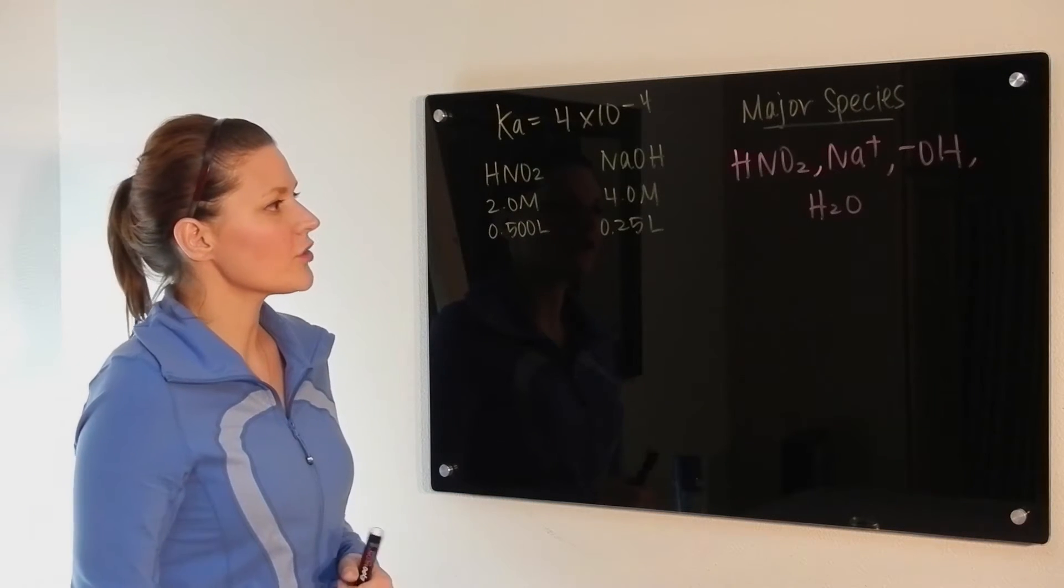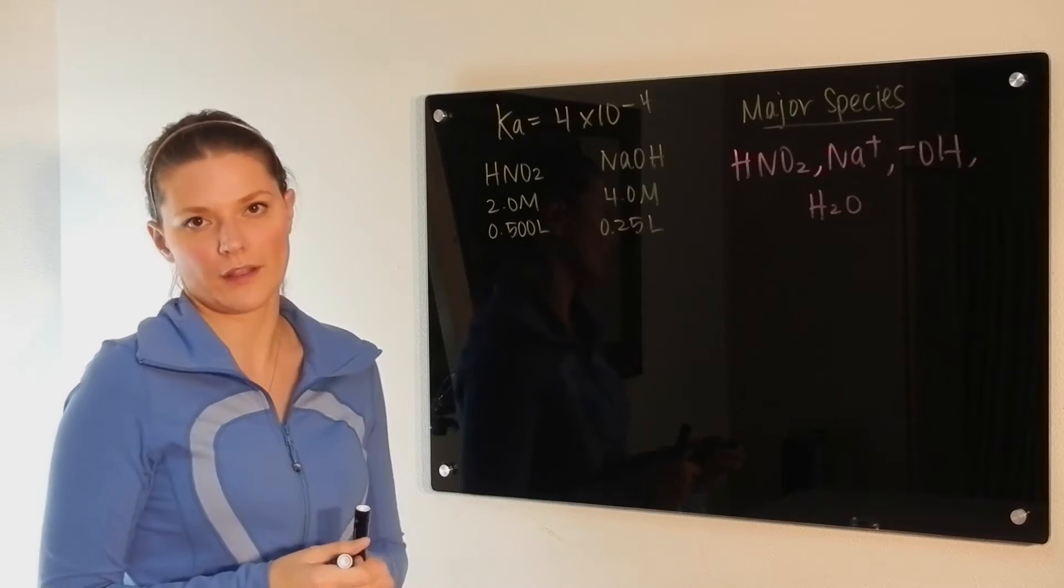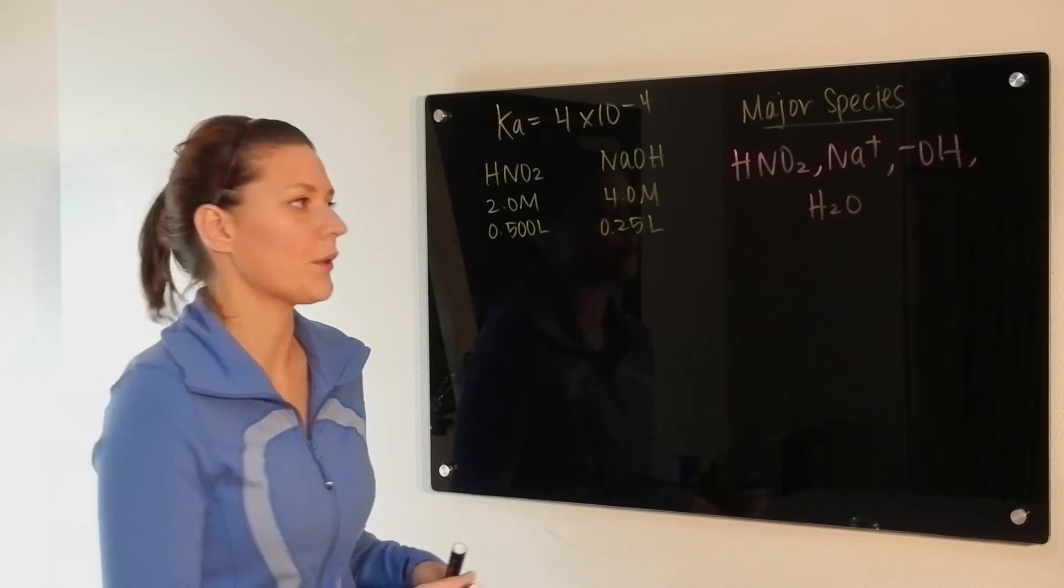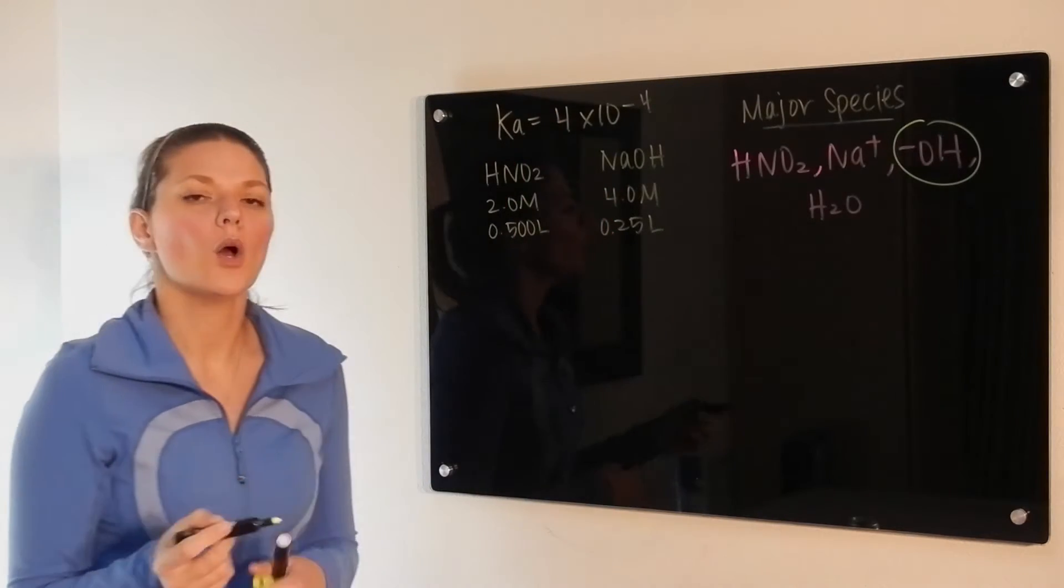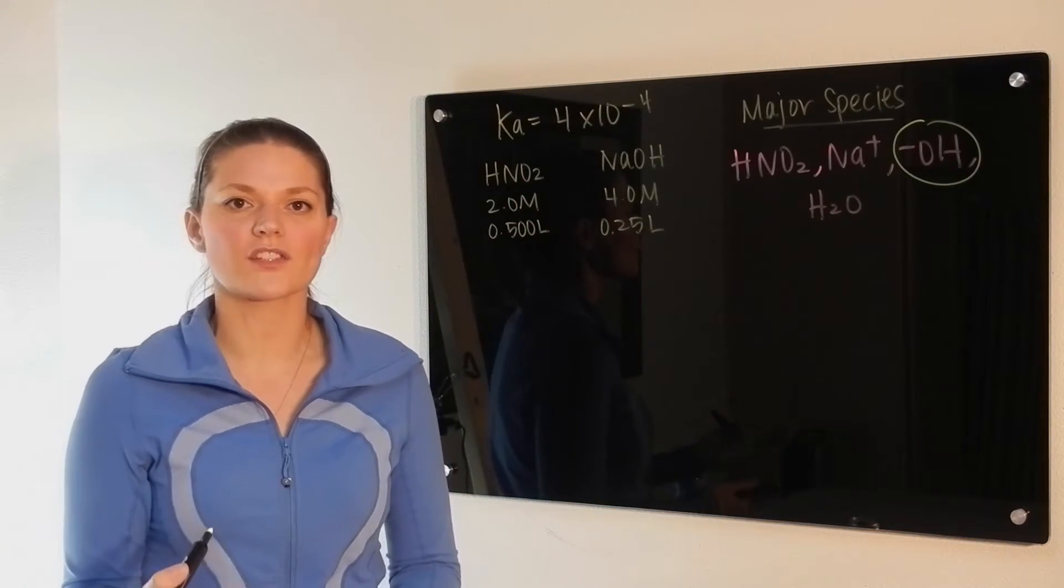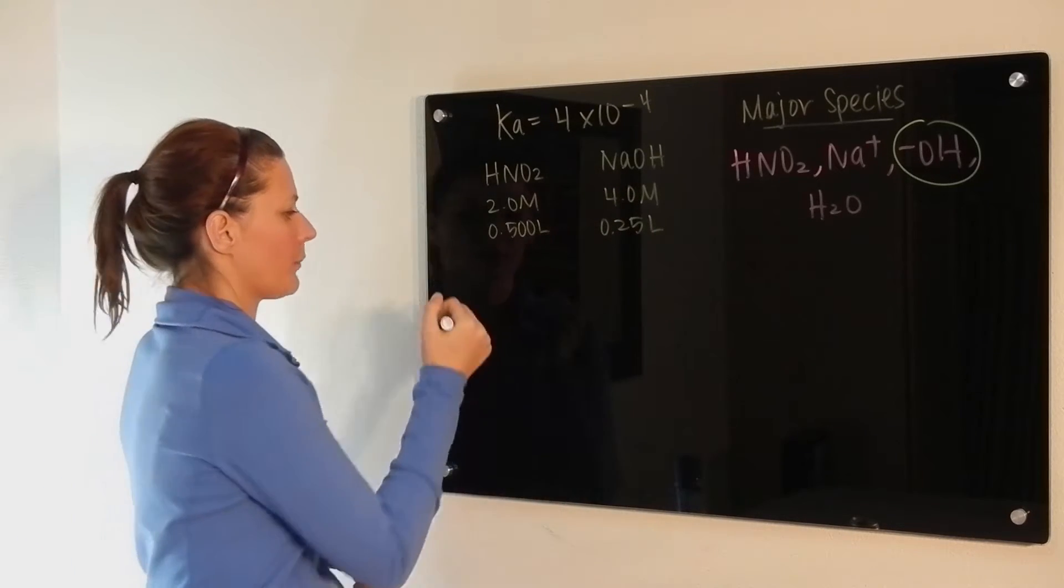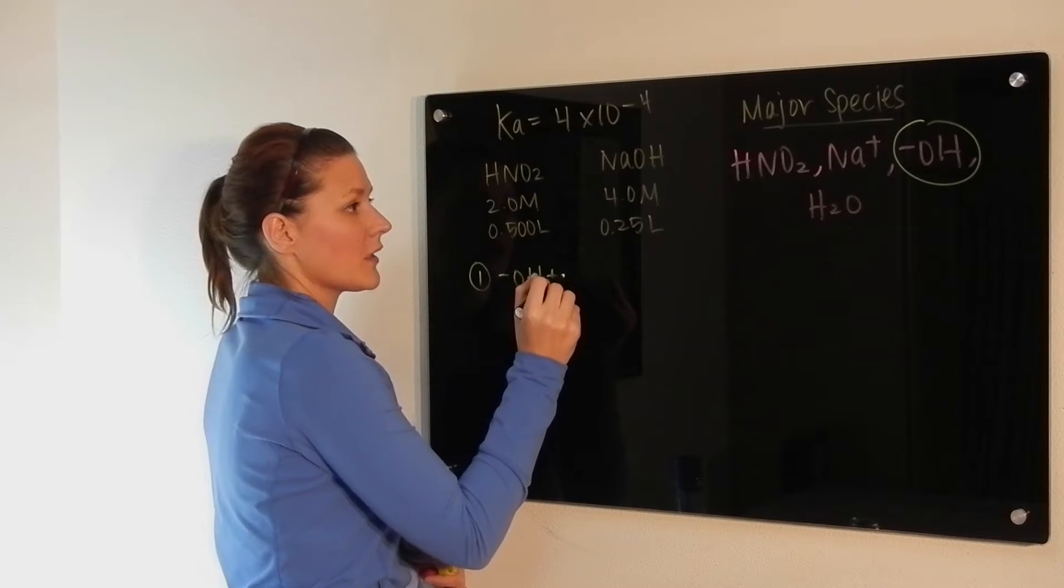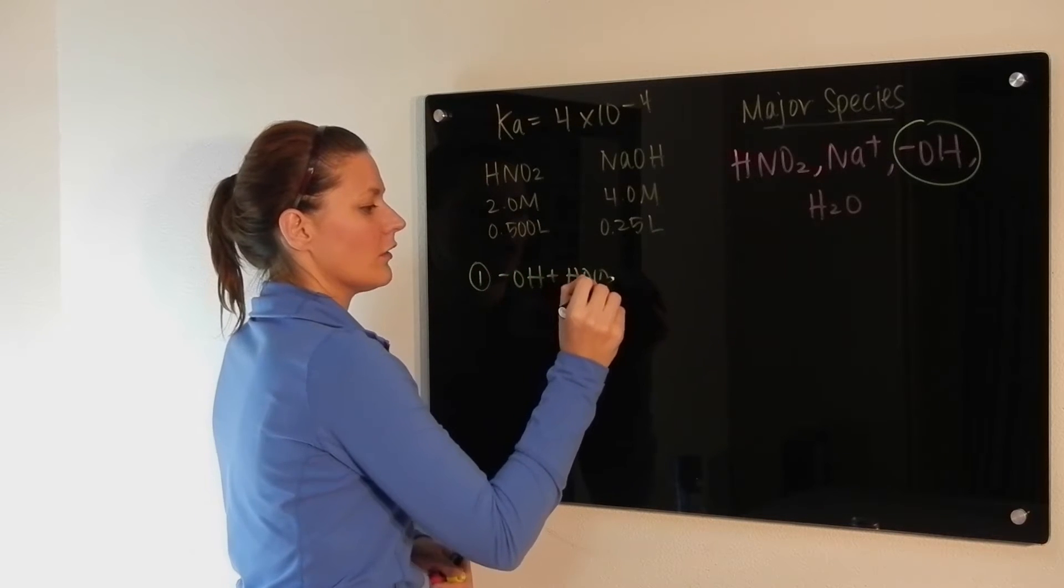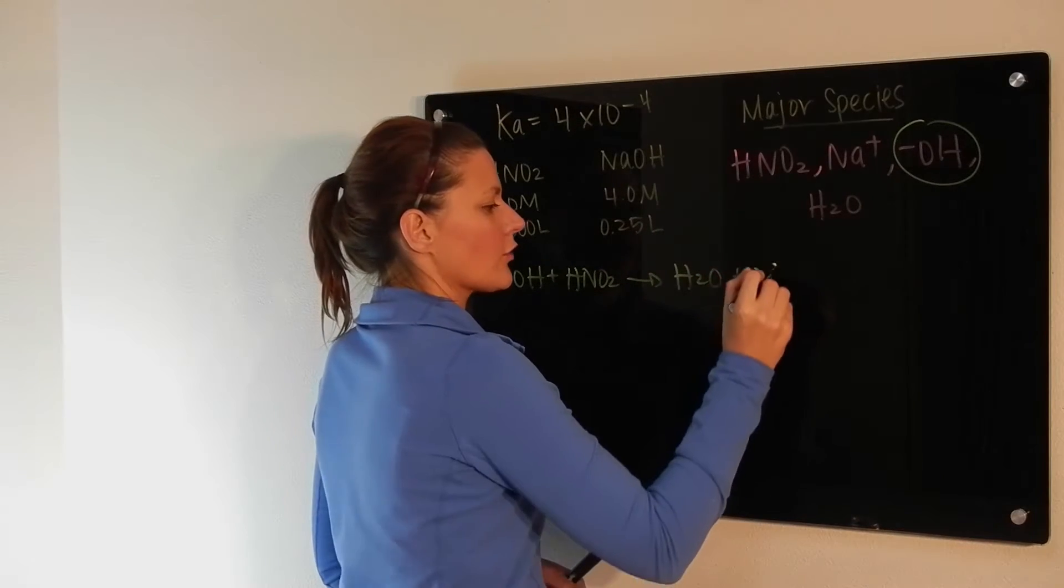So what we have to do now is look at that list of major species and check to see what has priority. As always, the strong substance has priority. So we're going to look at the reaction of hydroxide. Whenever you're putting something strong into solution, there's always going to be the first reaction, which is the priority reaction. The hydroxide reacting with the best acid in solution to completion, forming water and the conjugate base.